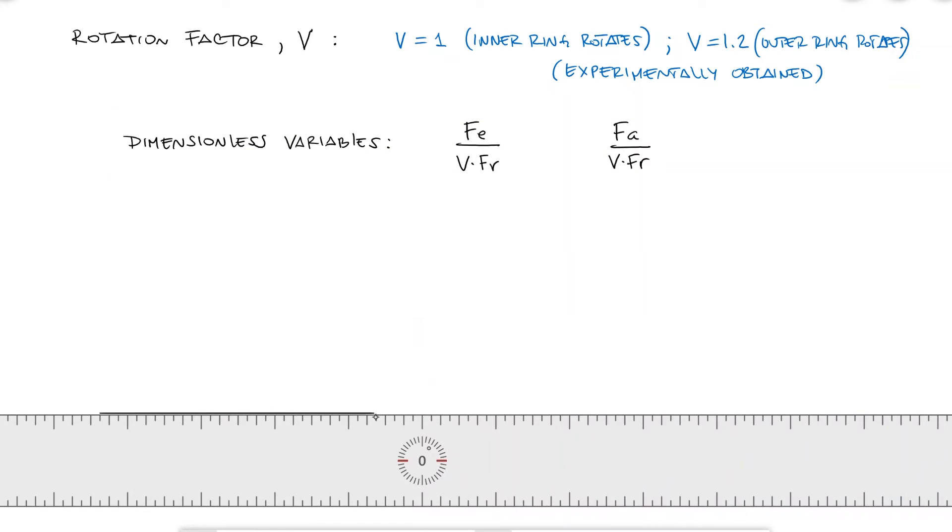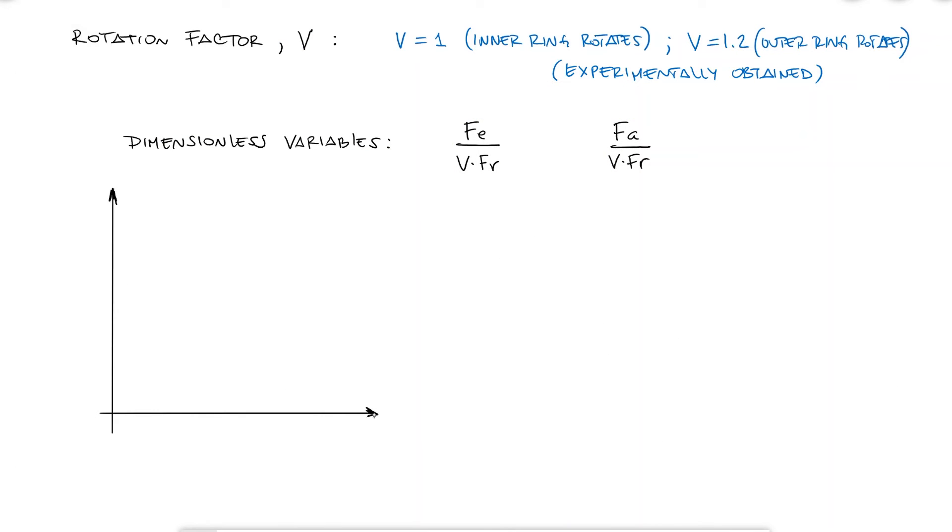When these two dimensionless variables are plotted against each other, with Fe on the Y axis and Fa on the X axis, and we plot results from testing experiments, we see two different sections.